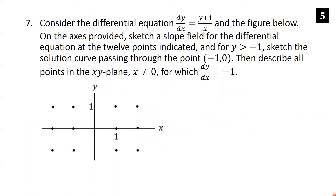Consider the differential equation dy/dx = (y+1)/x. This question has three parts: sketch a slope field at 12 indicated points, sketch the solution curve through (−1, 0) for y > −1, and describe all points where dy/dx = −1. To sketch the slope field, plug each point into (y+1)/x to find the slope at that location.